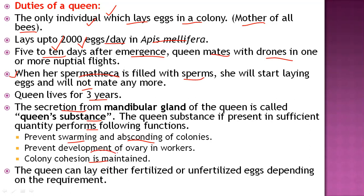The queen substance also prevents the development of ovarian workers. This is her way of giving a message to every worker that she is alive and continuously laying eggs — thus keeping order in the colony. The queen can lay either fertilized or unfertilized eggs depending on the requirement of the hive. These are the important functions and duties performed by the queen.